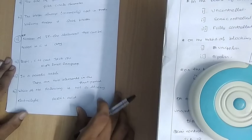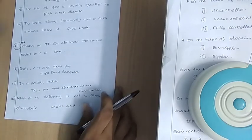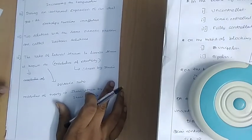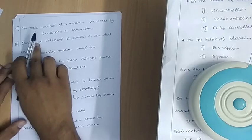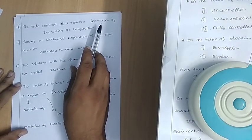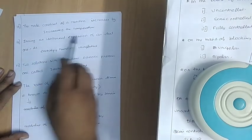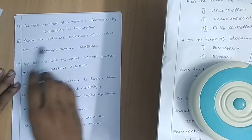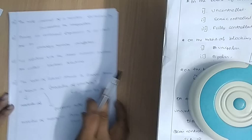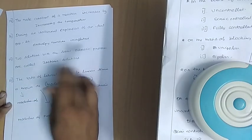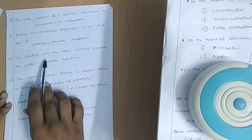The rate constant of a reaction increases by increasing the temperature. During an isothermal expansion of an ideal gas, its enthalpy remains unaffected. Two solutions with the same osmotic pressure are called isotonic solutions.